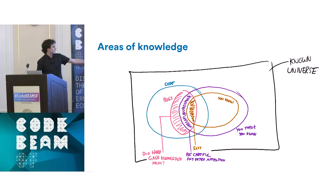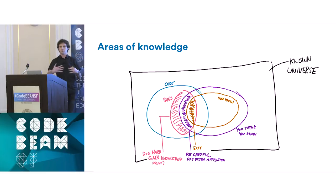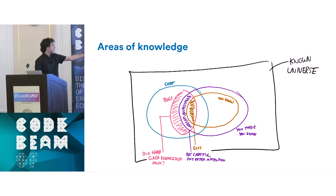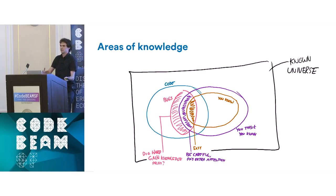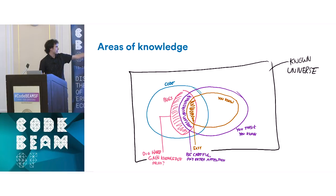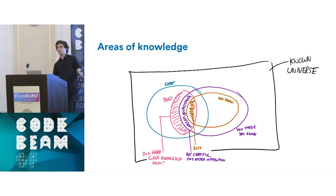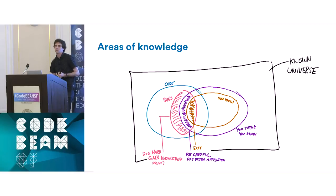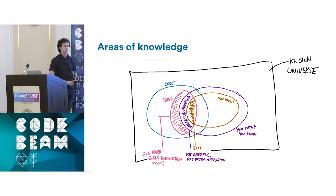The bugs that have to do with the things we know are easy — we tend to understand everything about them. What's in the things we think we know, we have to be careful and pay attention. We cannot really avoid the bugs about things we don't know in code — they just surprise us. We can dig hard to try to find them, gain knowledge, or send our prayers, which tends not to work very well.